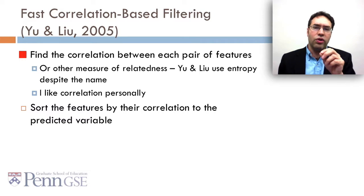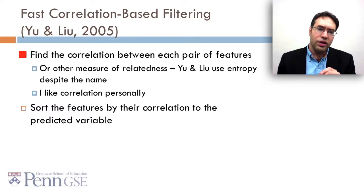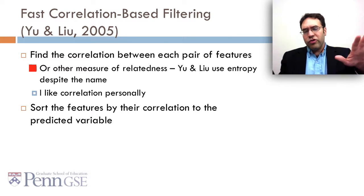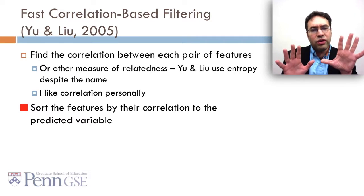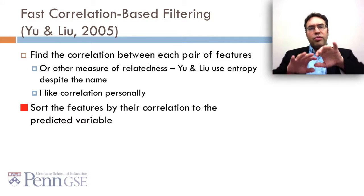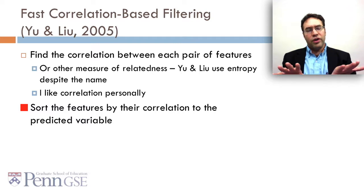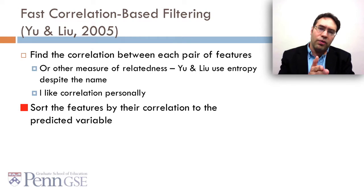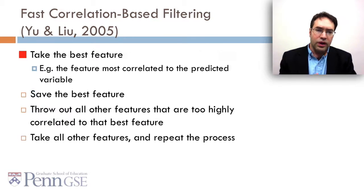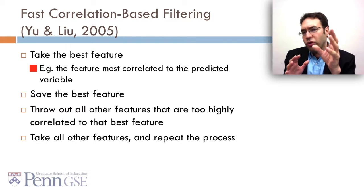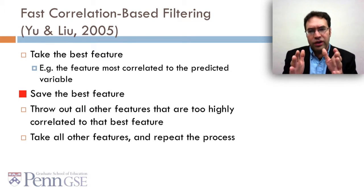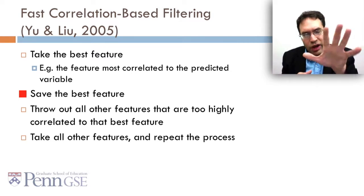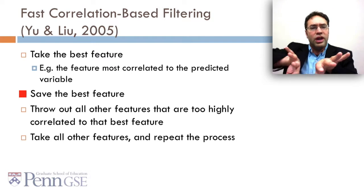An alternative is fast correlation-based filtering by Yu and Liu. In fast correlation-based filtering, you find the correlation between each pair of features or some other measure of relatedness. I like correlation personally. And then you sort the features by their correlation to the predicted variable. So before you even look at the correlation between the variables, you're going to say how well do they fit what you want to predict. Then you take the best feature, in other words the feature most correlated to the predicted variable or whatever goodness metric you have, you save the best feature. We're just going to take that variable, we're going to put it aside, we're going to say we're keeping that. No matter what else happens, we're keeping our best feature.